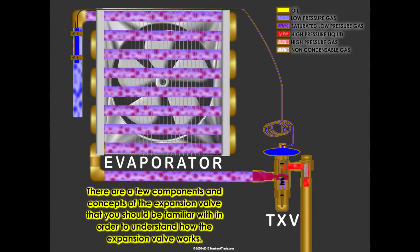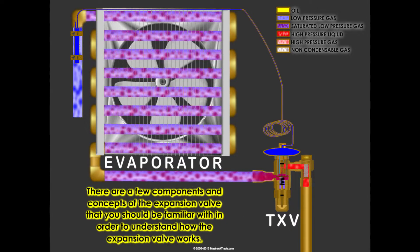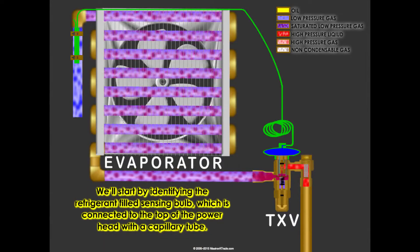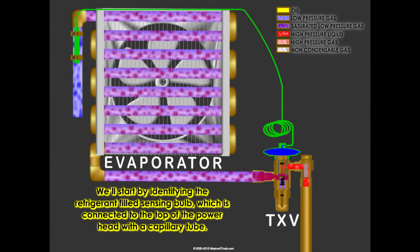There are a few components and concepts of the expansion valve that you should be familiar with in order to understand how the expansion valve works. We will start by identifying the refrigerant-filled sensing bulb, which is connected to the top of the power head with a capillary tube.